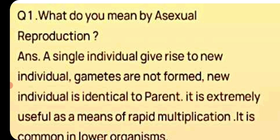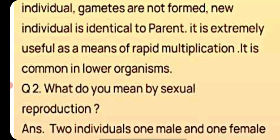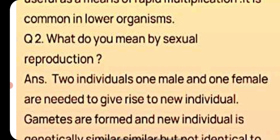Question number 1a: What do you mean by asexual reproduction? Answer: A single individual gives rise to a new individual. Gametes are not formed and the new individual is identical to the parent. It is extremely useful as a means of rapid multiplication and is common in lower organisms. This involves a single parent.